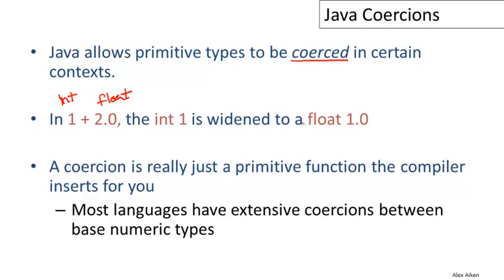Now a coercion, the right way I think to think of coercions is that they're really just primitive functions that the compiler inserts for you. So it's like you left out a function call, and the compiler notices that and puts it in. In this particular example, we can think of there being a primitive function that converts integers to floating point numbers in the obvious way.